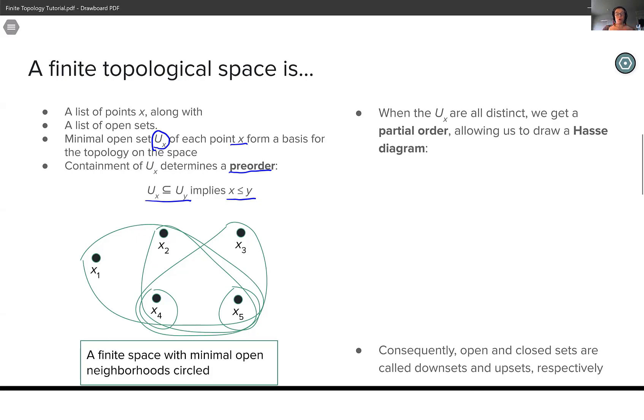Furthermore, when each point has its own distinct minimal open neighborhood, we have a partial order instead of a pre-order. And that allows us to draw something called a Hasse diagram, which is a directed graph that stores the same information as of these open sets in a more compact way.